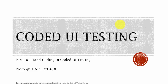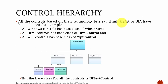That's why hand coding is a very important and useful option that Microsoft has given us. Microsoft has provided all the APIs as a library for us to do hand coding of the Visual Studio test, so you can do the same operations as in recording of the code. So before jumping into that, let's first understand the controls hierarchy.